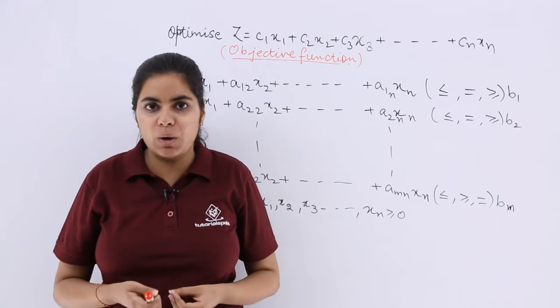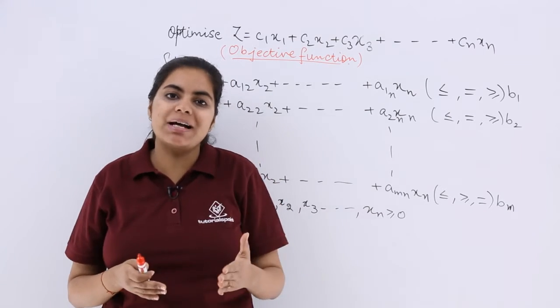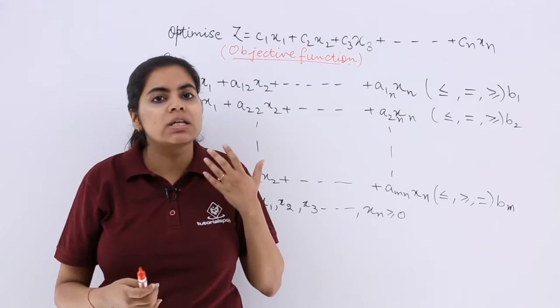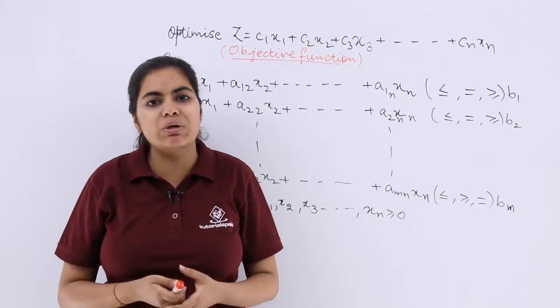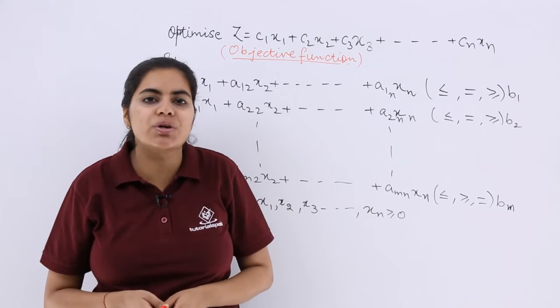The optimization problems focus on the maximization or minimization of certain things. For example, profit you have to maximize, losses you have to minimize, and uses of resources you have to minimize.